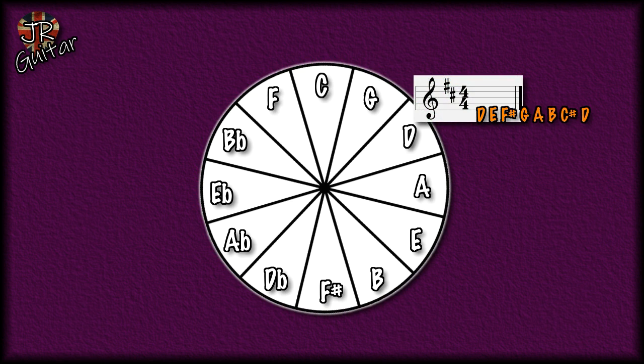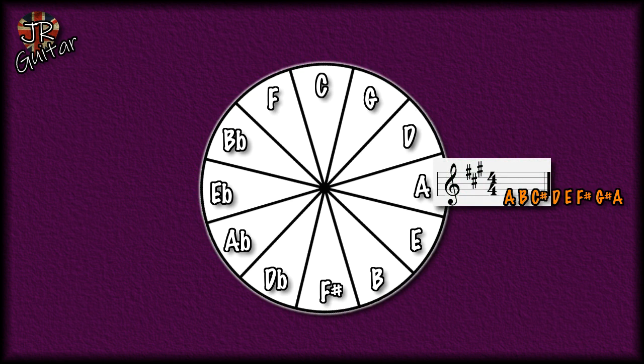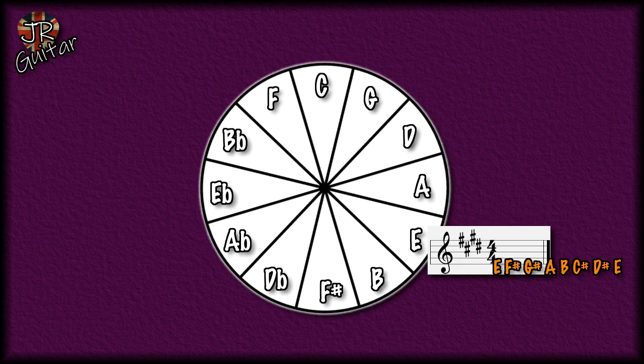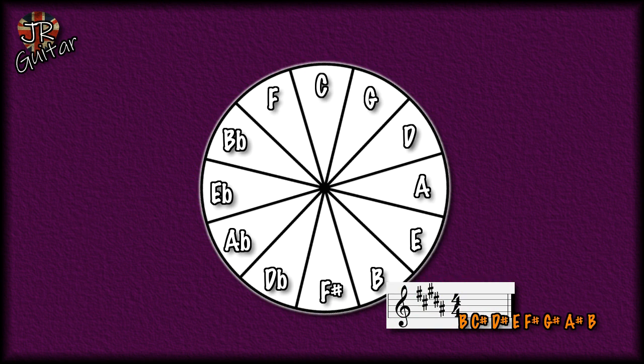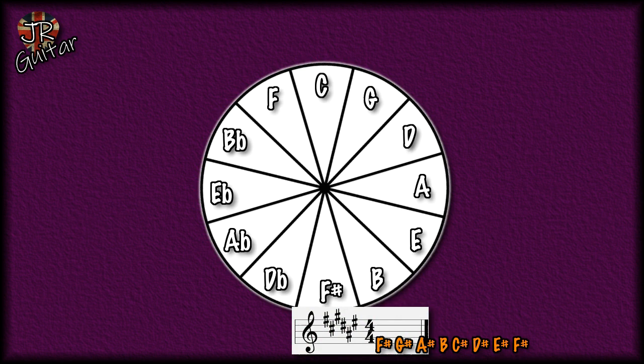Moving to the key of D, we have two sharps: F sharp and C sharp. The key of A has three sharps: C sharp, F sharp and G sharp. The key of E has four sharps: F sharp, G sharp, C sharp and D sharp — when you see four sharps in a key signature, you know you're in E. The key of B has five sharps: C sharp, D sharp, F sharp, G sharp and A sharp. Finally, the key of F sharp has six sharps: F sharp, G sharp, A sharp, C sharp, D sharp and E sharp.